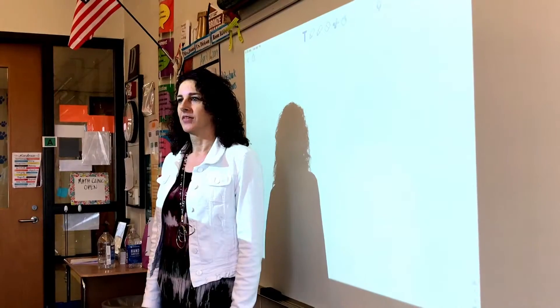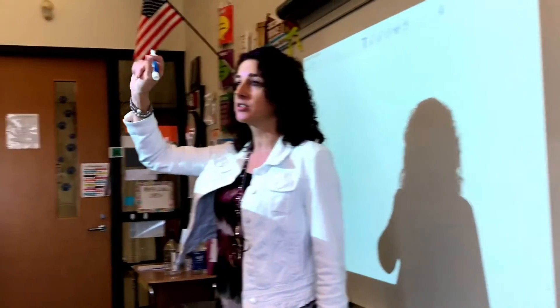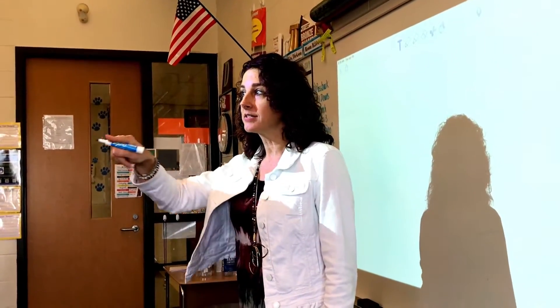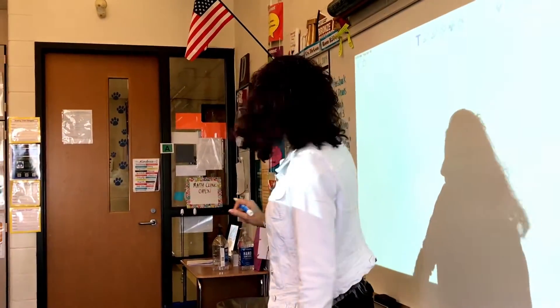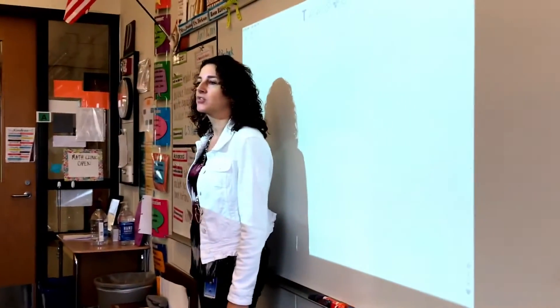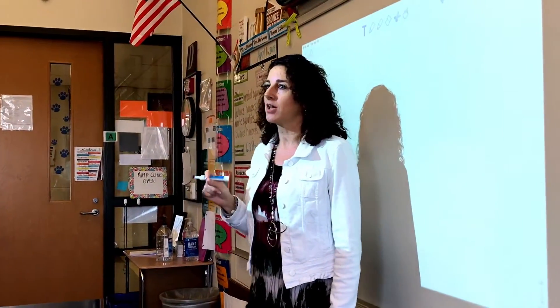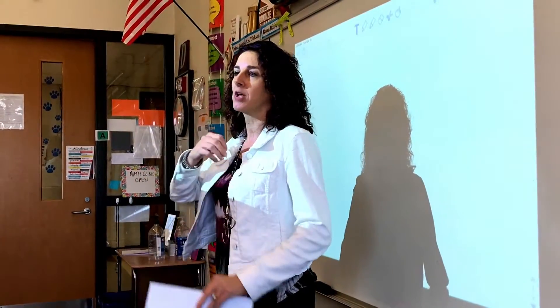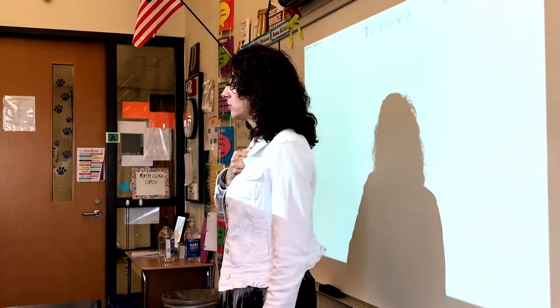I'd like to show you a short clip now of my sixth grade advanced math classroom. We're working with the seventh grade curriculum and at this particular time we're in unit 5 lesson 15, doing rational numbers. All right, eyes on me students — we're going to start with a number talk today. We are on lesson 15 of unit 5. Today's target is: I will be able to solve equations that include rational numbers and rational number solutions.